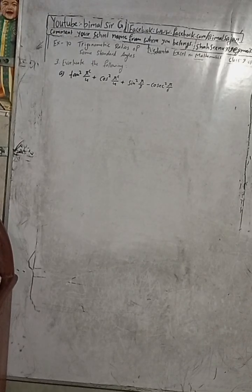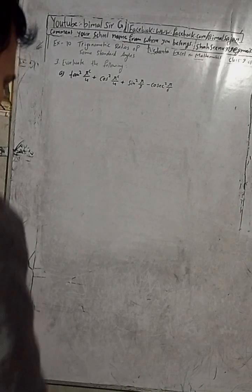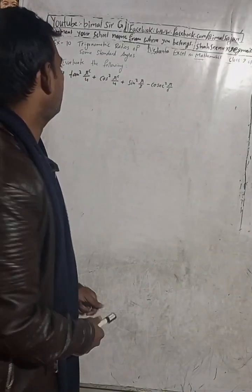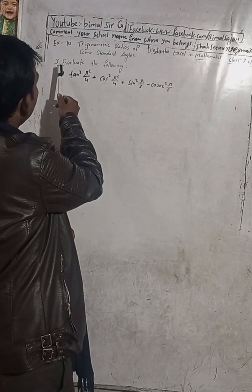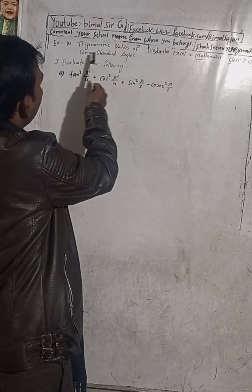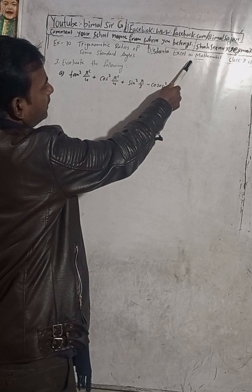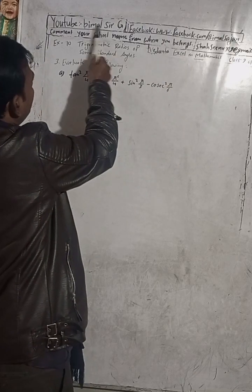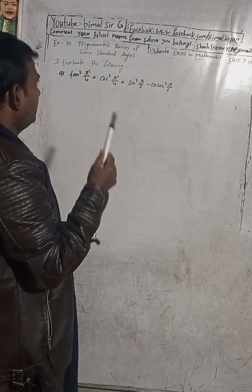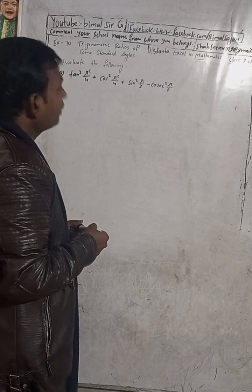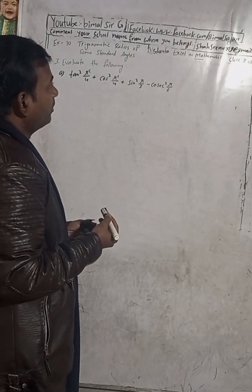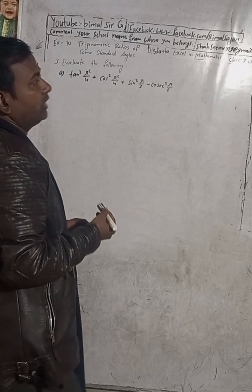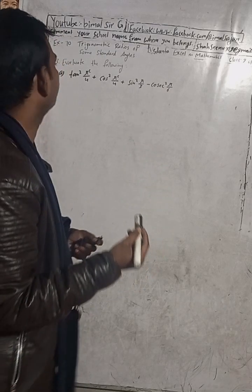Hi class 9 and 10 students, welcome back to Vimal Surge's YouTube channel. In this chilly cold season I am here to warm up your day and night with exciting content. Let's make the winter season a little warmer with mathematical solutions of class 9 and 10. This is question number 3, exercise 10: trigonometric ratios of some standard angles, optional mathematics class 9. Don't forget to check the playlist on the Vimal Surge YouTube channel — you will get a lot of solutions for class 9 and 10. If you don't find the solutions, comment so I can help you.